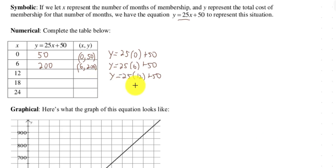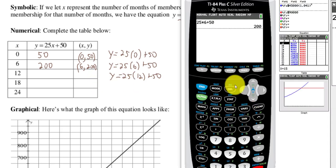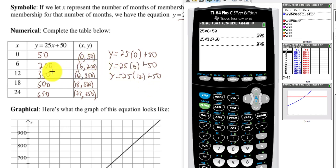And then if we were to do 12 months, I could still use my calculator, except it's now going to be 25 times 12 plus 50. And then you'd have to do it again for 18 months and then for 24 months. So you can pause the video and then calculate these values just to make sure that your numbers match my numbers. So it looks like every six months, the amount you've paid goes up by $150.